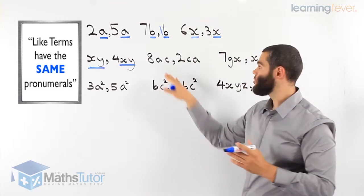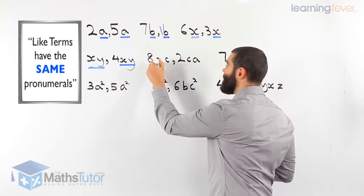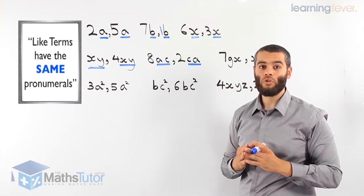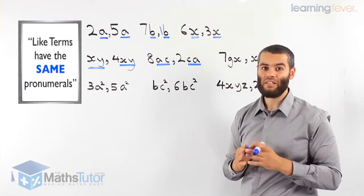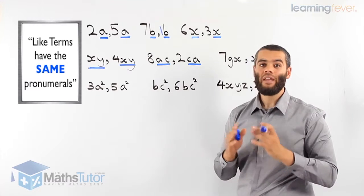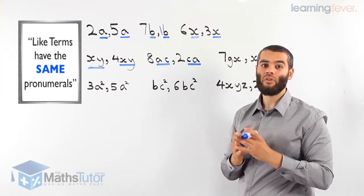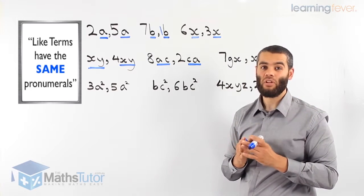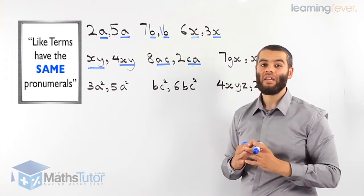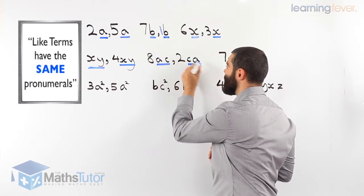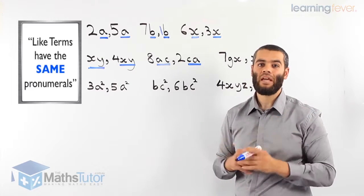8ac and 2ca. Do they have the same pronumerals? We have ac here and ca here. They have the same pronumerals, however they have been swapped. It doesn't matter, as long as they have the same pronumerals — the order does not matter at all. ac means a times c, and ca means c times a; it's the same answer. Therefore, 8ac and 2ca are like terms and can be added or subtracted if we need to.